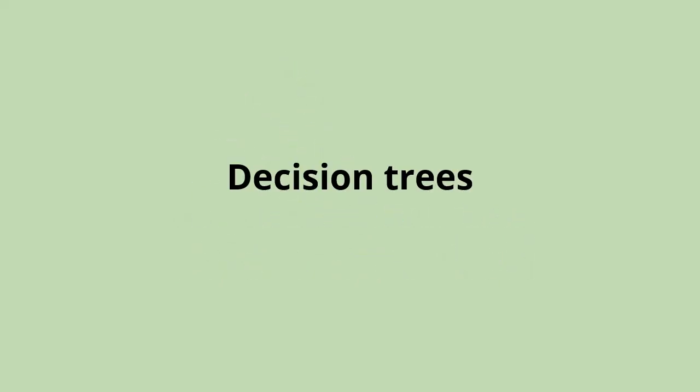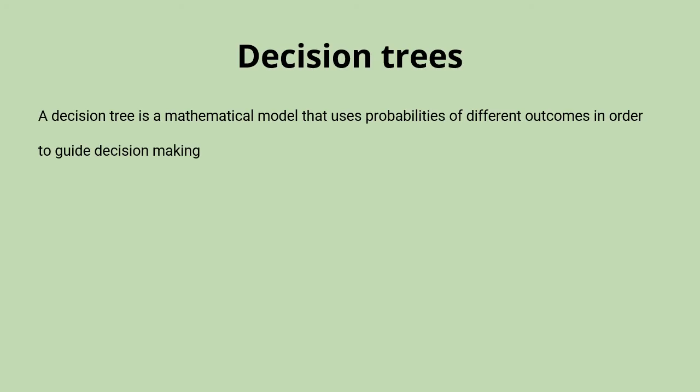This video is about decision trees. Decision trees are models used to guide decision making between a range of different options. They do this by looking at the probabilities of the different outcomes which might result from a decision.